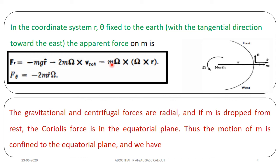In the direction of theta, I got minus 2m r-dot omega, meaning the velocity is given by r-dot. So the component of this force along the direction of theta is minus 2m r-dot omega. Coming to the next slide, and thank you.